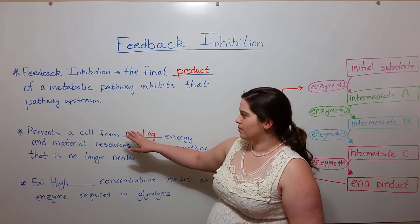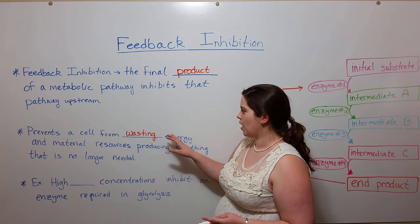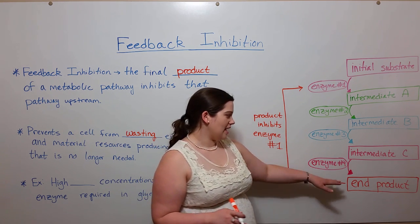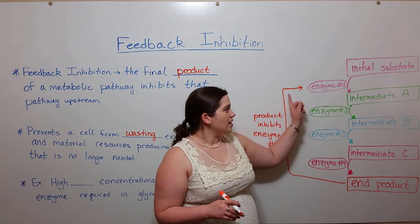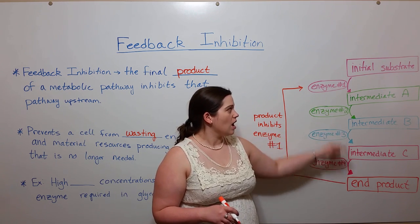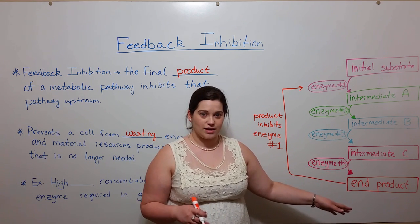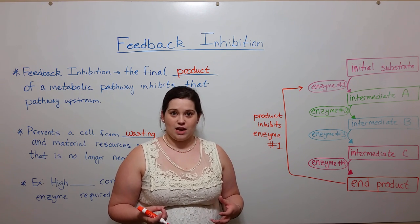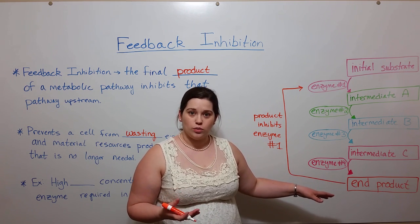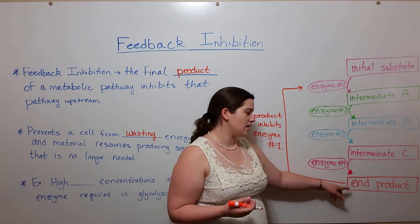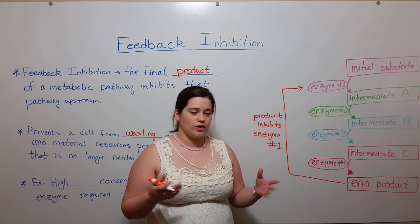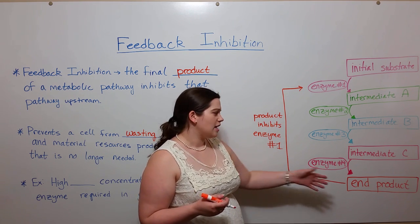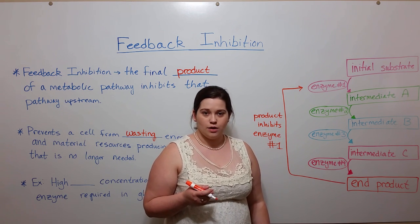The reason that feedback inhibition prevents a cell from wasting these things is because at a certain point, the end product is no longer needed. That means the metabolic pathway will run and run and run and make lots of end product, but at some point that end product will no longer be needed by the cell. Since it's not needed, it won't be used, meaning its concentration in the cell will increase — and that is what allows it to inhibit that first enzyme to keep even more unnecessary end product from being made.